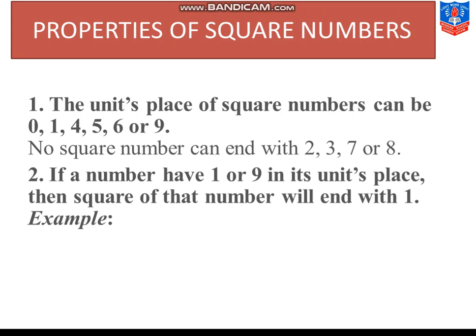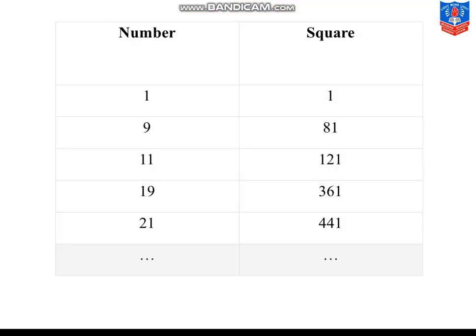Next is, if a number has 1 or 9 in its units place, then square of that number will end with 1. I've also just explained, 1 or 9 se related jitne bhi squares honge, jitne bhi numbers ke unit digit 1 or 9 hai, unke squares ke unit digit hamesha 1 rahega. Example: 1², 1; 9², 81; 11², 121; 19², 361; 21², 441. All have unit digit 1. You can also try 39², 159², 2001² - in sab ke squares ka unit digit hamesha aapko 1 hi milega.